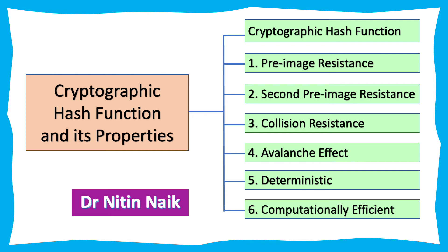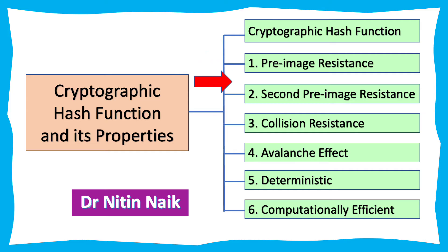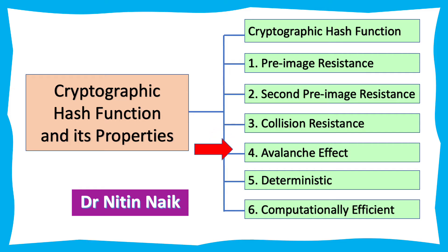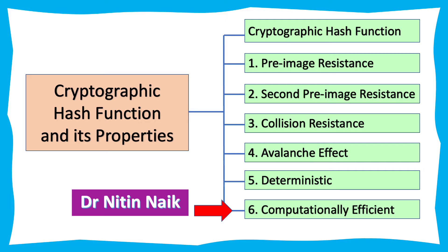Hello everyone, I am Nitin and in this video I will be discussing what is a cryptographic hash function and its six important properties: pre-image resistance, second pre-image resistance, collision resistance, avalanche effect, deterministic, and computationally efficient. So let's get started.